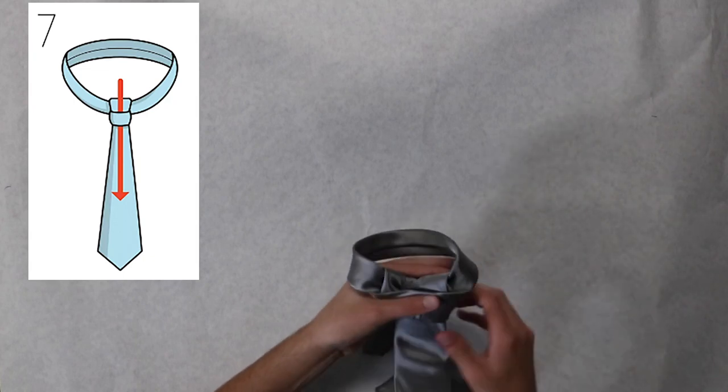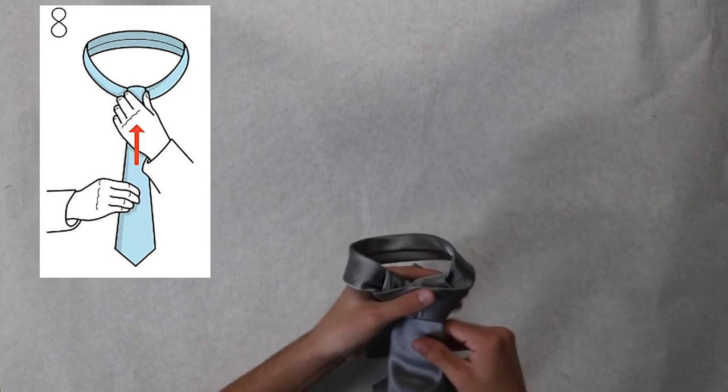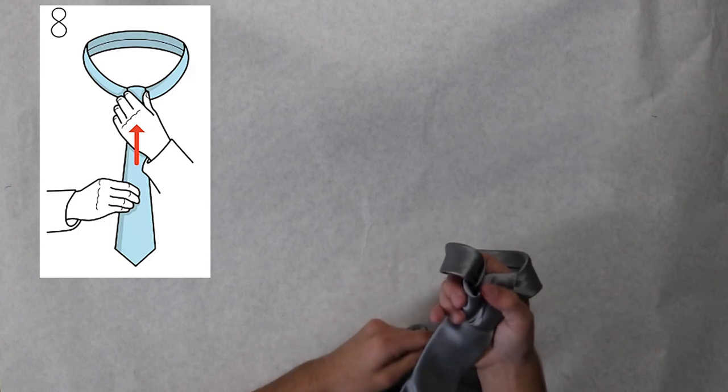To tighten the tie, squeeze the middle of the knot and pull down on the smaller end.